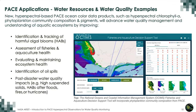As one example, the National Oceans and Coastal Information Management System's fisheries and aquaculture decision support tool will incorporate phytoplankton community information once it's available from PACE, in order to improve its decision-making capabilities. This is just one example of an existing tool that aims to be enriched through incorporation of PACE data.